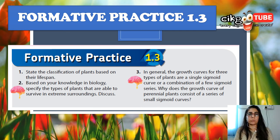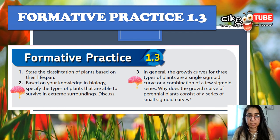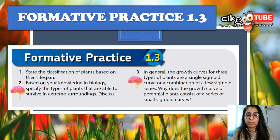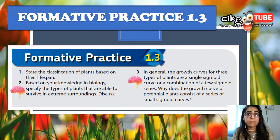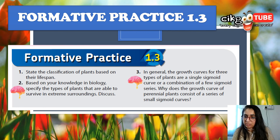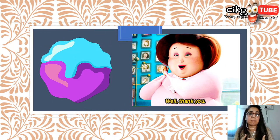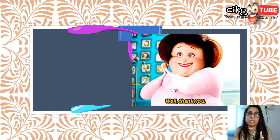Now let's do formative practice 1.3. Question 1: State the classification of plants based on their lifespan. Question 2: Based on your knowledge in biology, specify the types of plants that are able to survive in extreme surroundings and discuss why. Question 3: In general, the growth curves for three types of plants are a single sigmoid curve or a combination of a few sigmoid curves — why does the growth curve of perennial plants consist of a series of small sigmoid curves? I will put the answers in the description box for you to check. Thank you for watching — please like and subscribe!